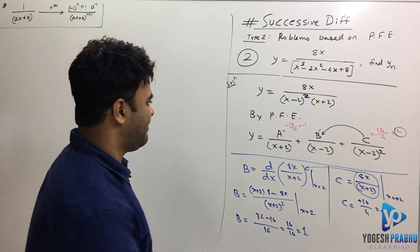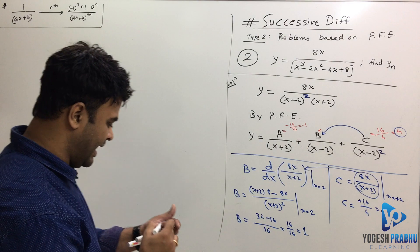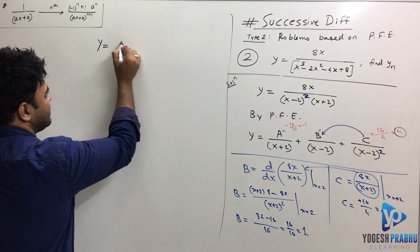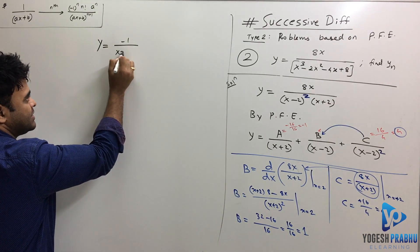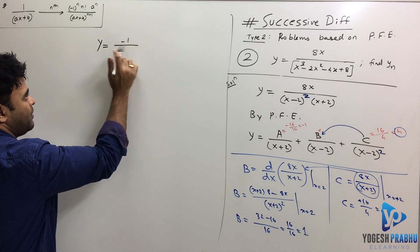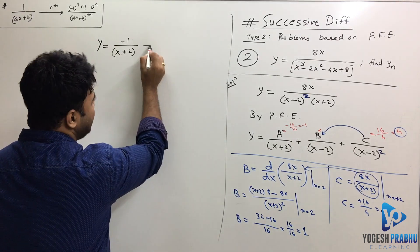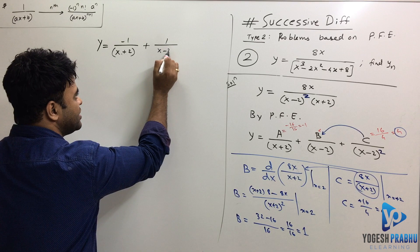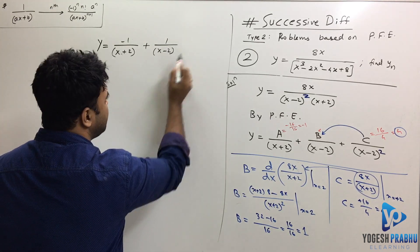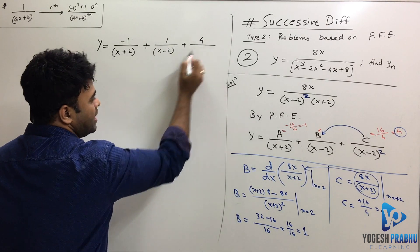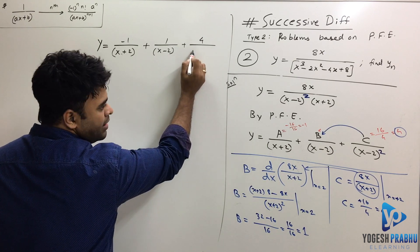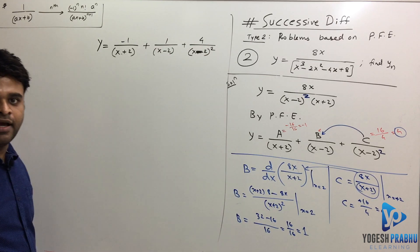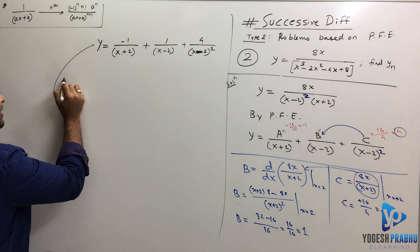Now putting the values back: y equals minus 1 over (x plus 2) plus 1 over (x minus 2) plus 4 over (x minus 2) squared.